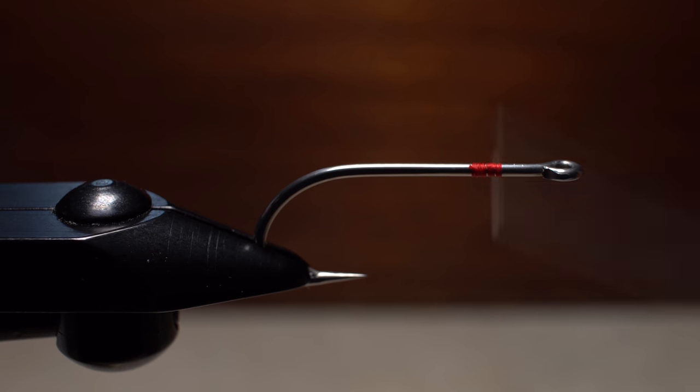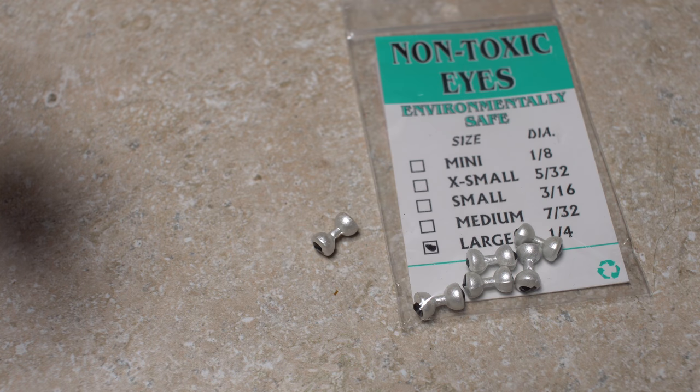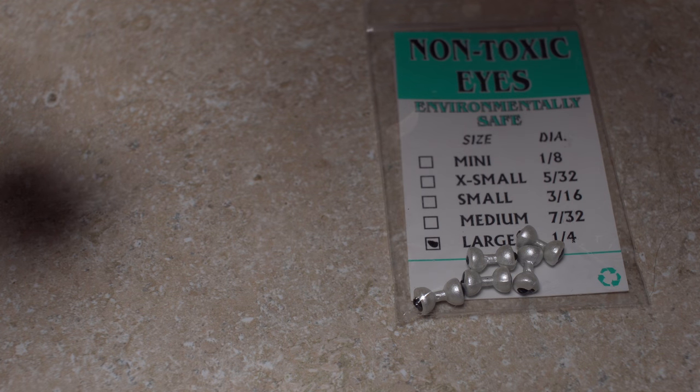You want to form a nice little thread pad on which the dumbbell eyes will rest. For the eyes, I'm going to use white, size large, non-toxic dumbbell eyes that are one quarter of an inch in diameter.